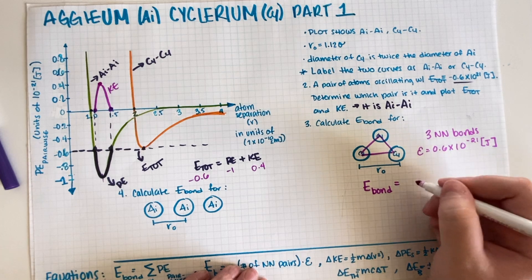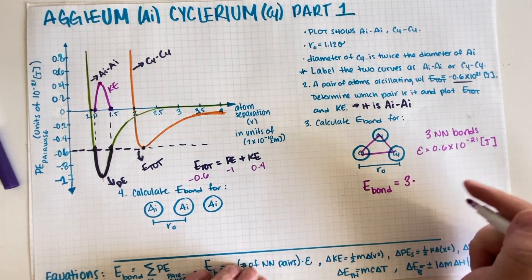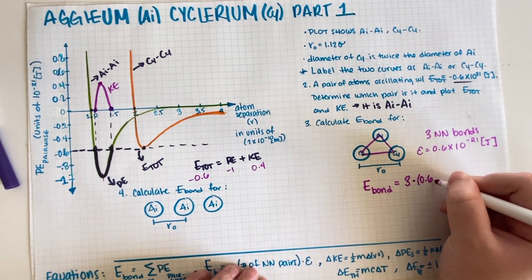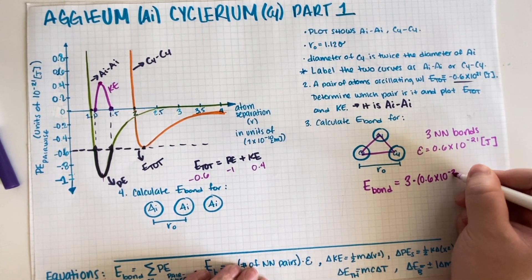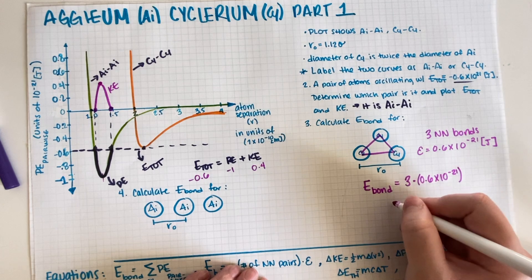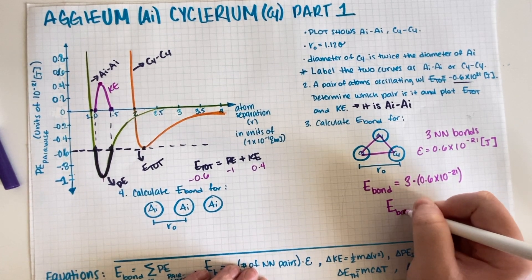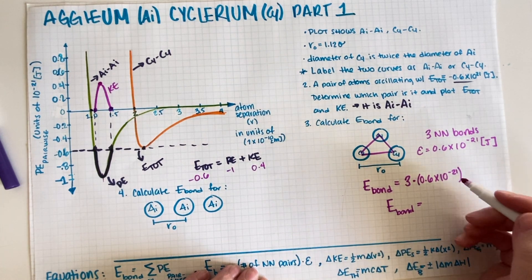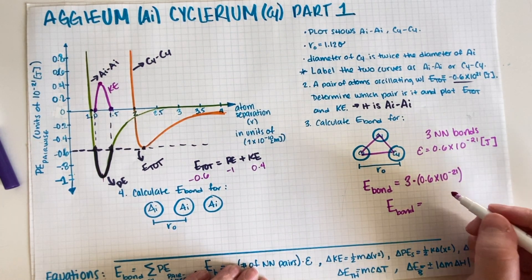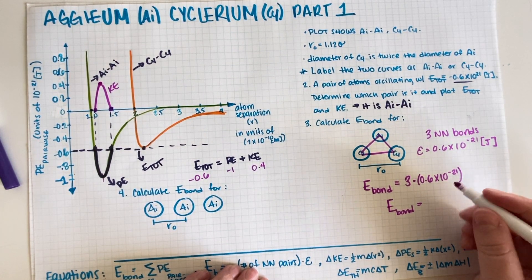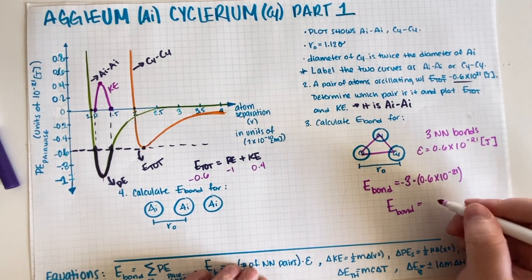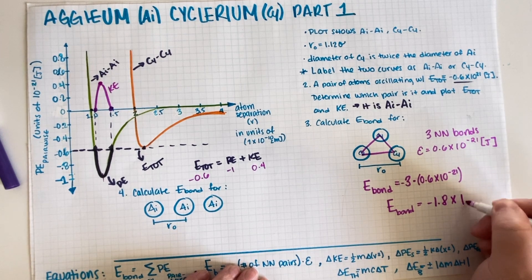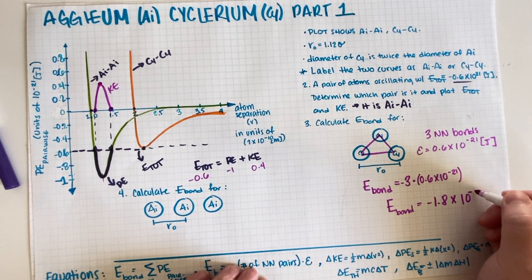So E_bond is three bonds times the energy of each bond. So E_bond for this configuration is equal to -1.8 × 10⁻²¹ joules. Final answer.